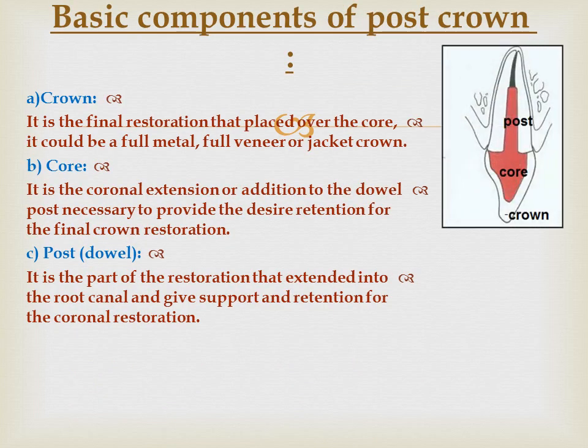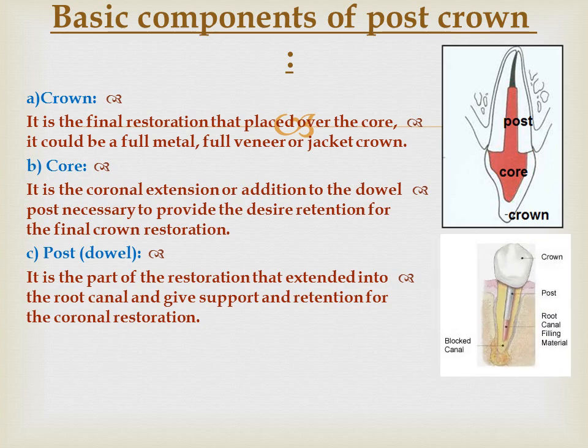The basic components of a post crown are: the crown, the core, and the post or dowel. The crown is the final restoration placed over the core; it could be a full metal, full veneer, or jacket crown. The core is the coronal extension of the post.